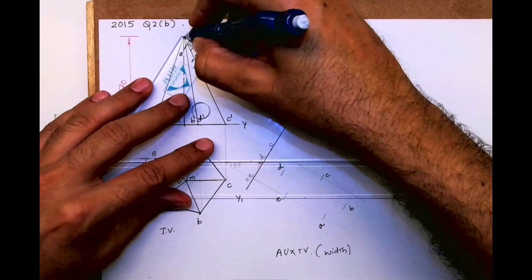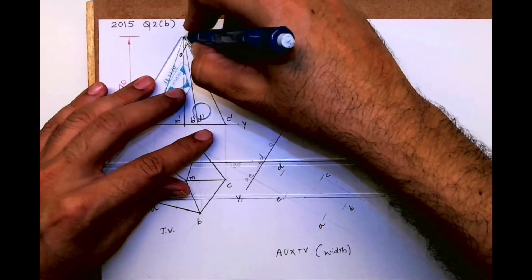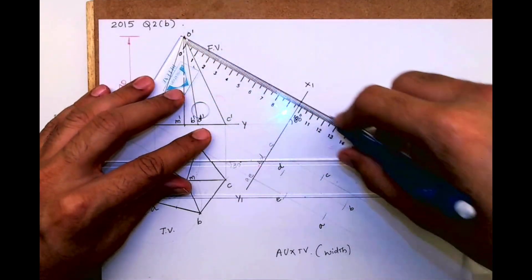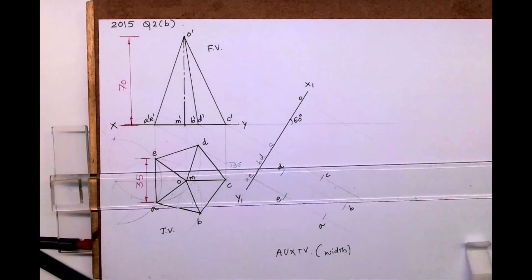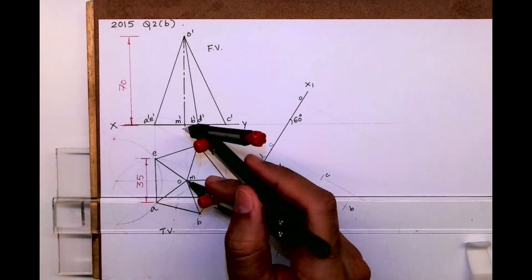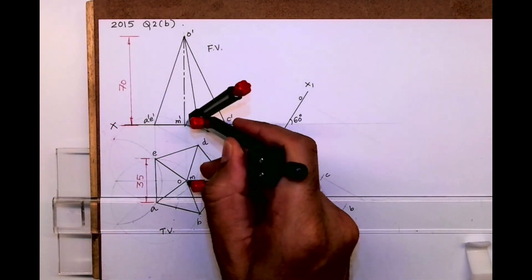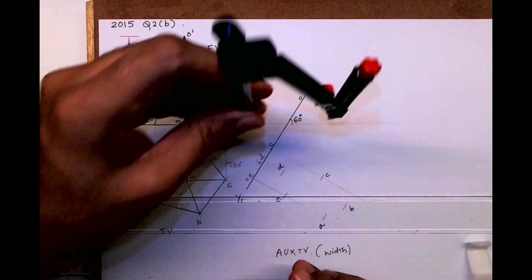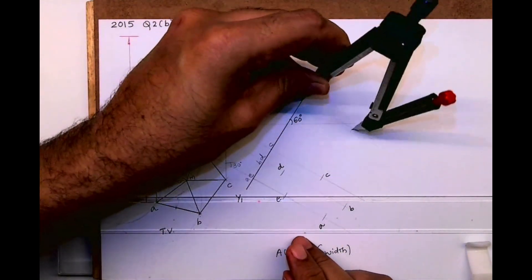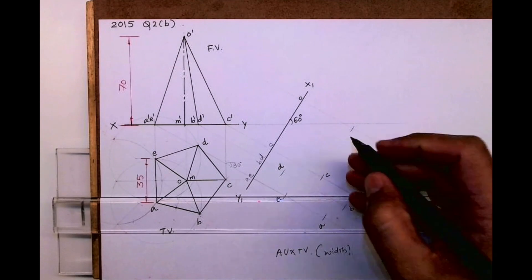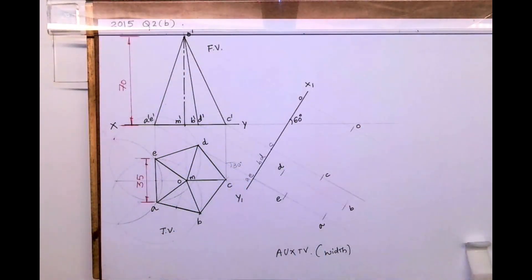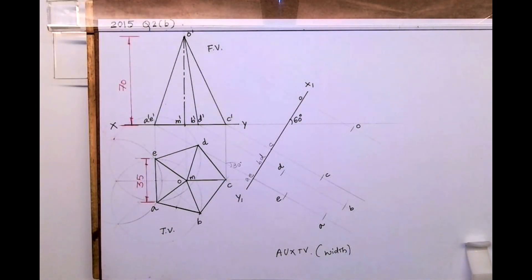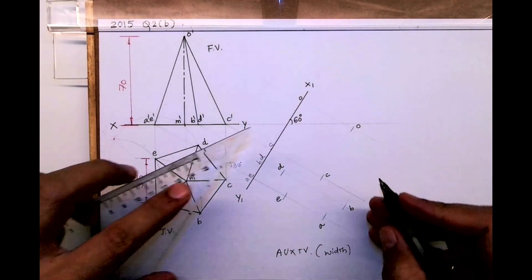Then from O', you draw a line. Now what you do - this is point O. Now you take XY to O. Remember, we are transferring width in auxiliary top view. This is very important from ICSE point of view. In engineering drawing nowadays they don't ask auxiliary, but you should know how to draw auxiliary.